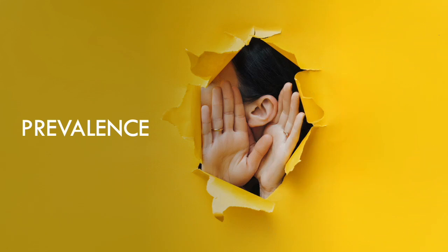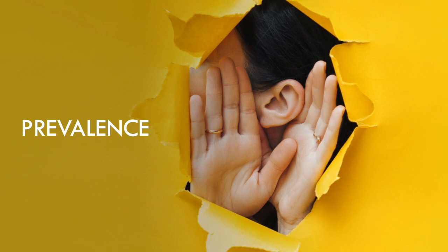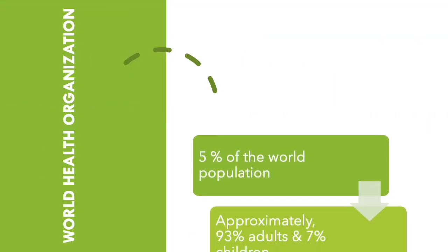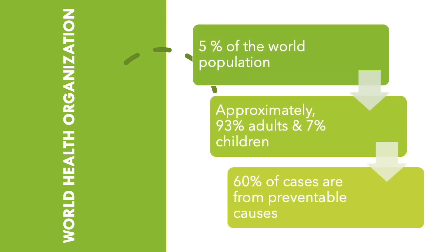How many people in the world have a hearing impairment? According to the World Health Organization, approximately 5% of the world population has a hearing impairment. Of those 5%, approximately 93% are adults and 7% are children. 60% of cases are from preventable causes.